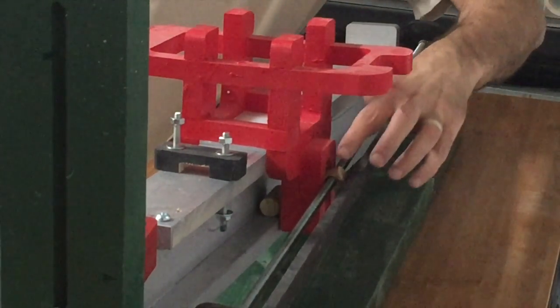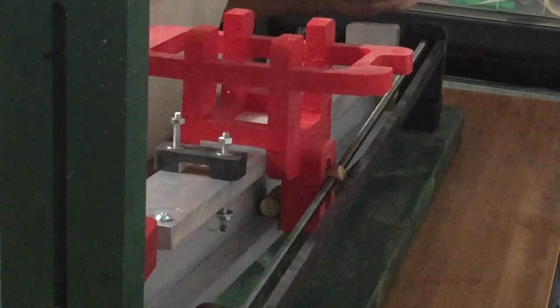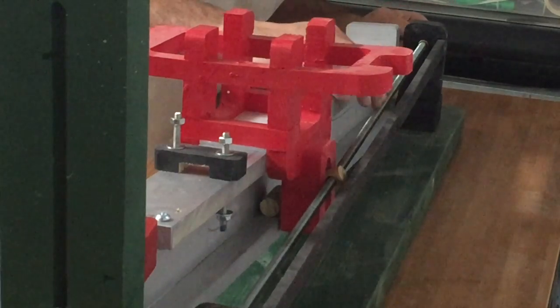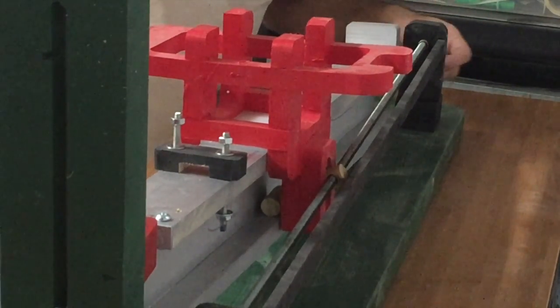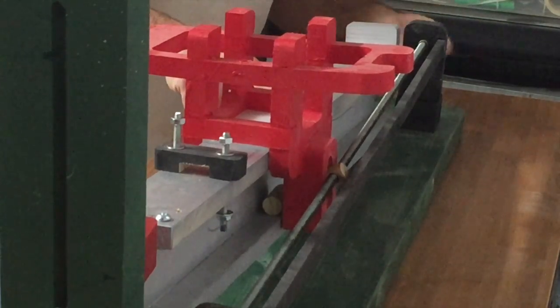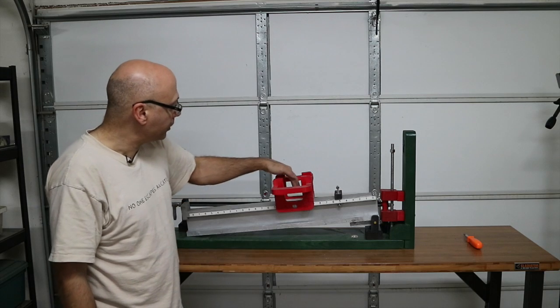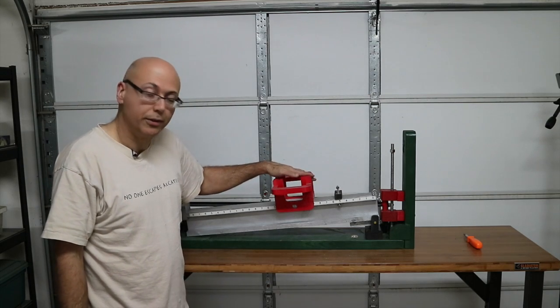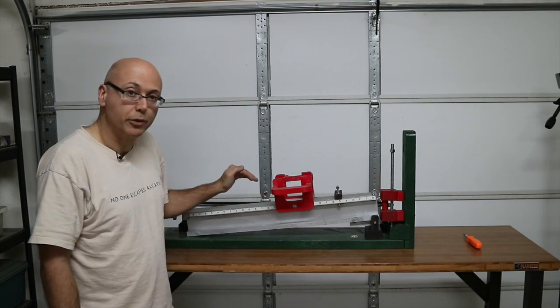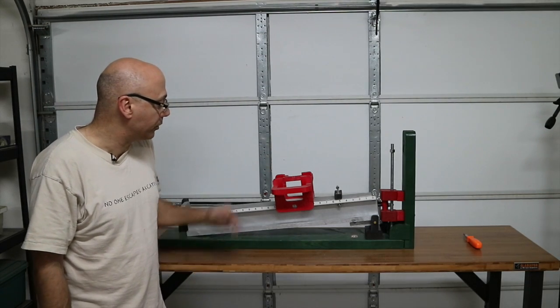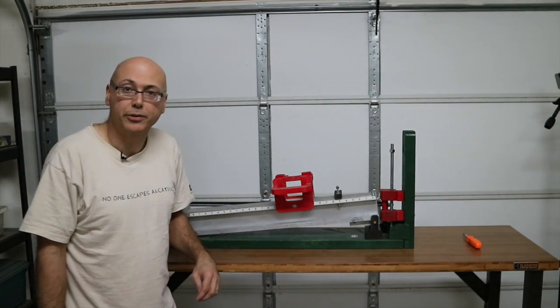So when I turn - this threaded rod is supported by these bushings here - so when I turn the threaded rod with this crank here, I can move the carriage very slowly along the I-beam. And what that does is it slowly moves the weight that is on the I-beam, which is applying the force to the joint. It moves it very slowly, and then we can watch as the load goes up and applies more and more force to the joint to see where it's going to break.